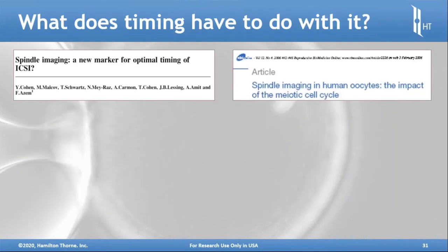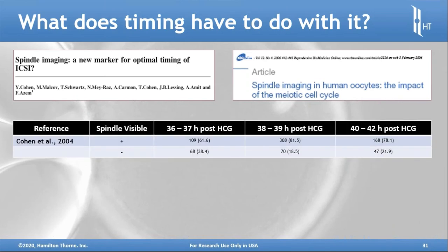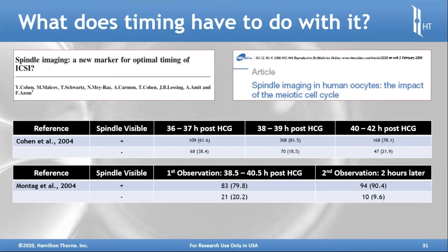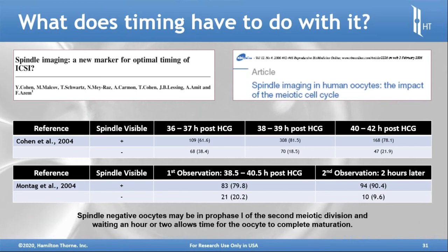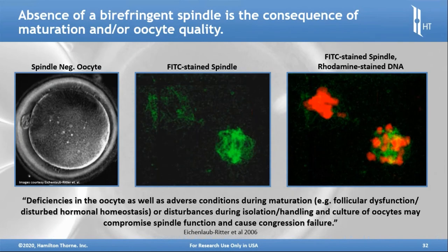Spindle imaging serves as a new marker for optimal timing of ICSI. If the spindle is not visible or is still adjacent to the polar body that hasn't fully extruded, it indicates more time in the incubator may be needed. Spindle-negative oocytes may be just a little slow and may require another hour or two to complete maturation. The absence of a birefringent spindle can be a consequence of maturation status or oocyte quality.